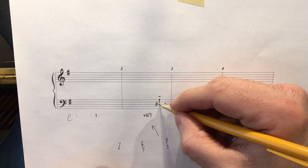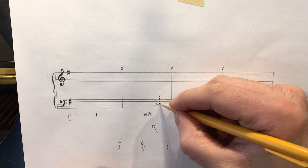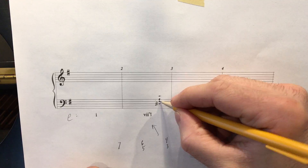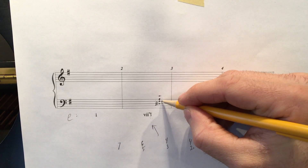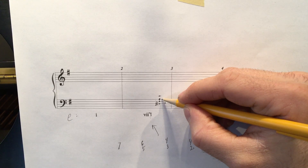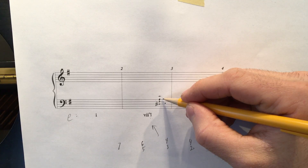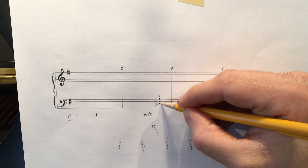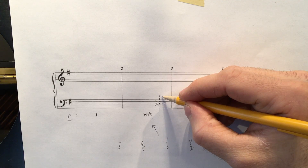Here we have the structure of a leading tone diminished 7th chord in the key of E minor. D sharp to F sharp is a minor 3rd. From the root D sharp to the A natural is a diminished 5th. And then from the D sharp to the C, that's your diminished 7th. So in total, all the notes together — D sharp, F sharp, A natural, C natural — form the fully diminished 7th chord.